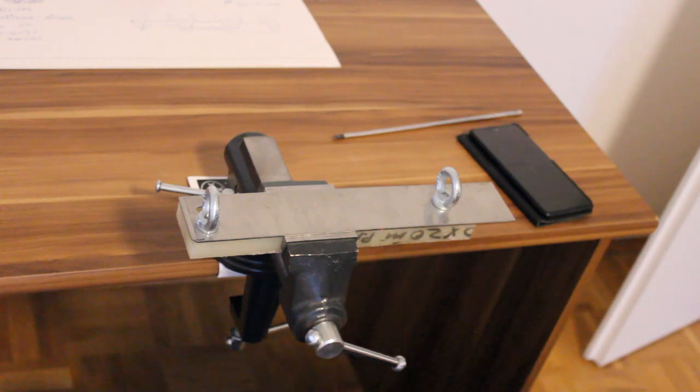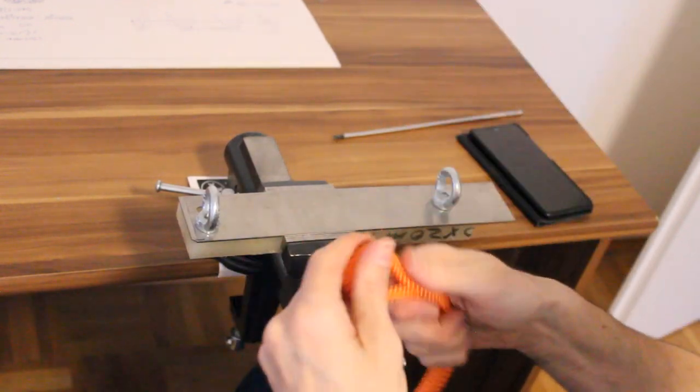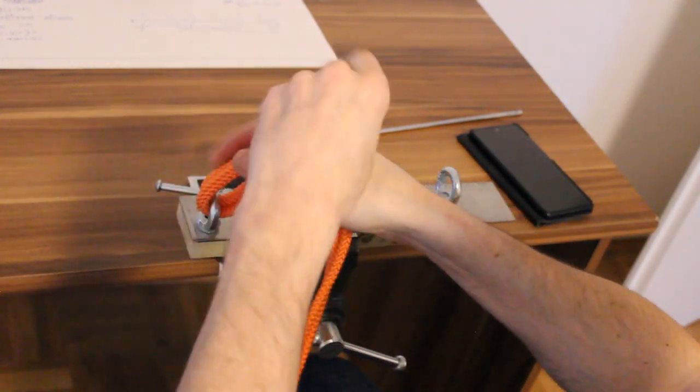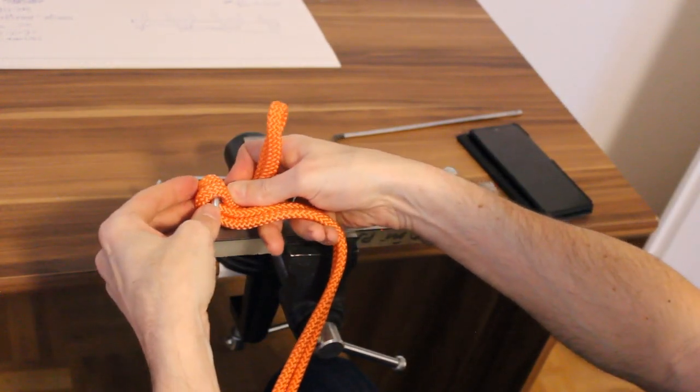And another reason why you might not want to do a round turn and two half hitches, is you've got a nice fat rope here. And it's taking up the hole of the eye. You can't do a round turn. It's not going to fit there anymore.